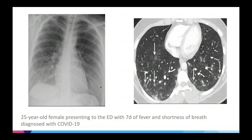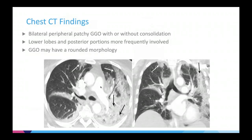This is another example: a 37-year-old male with fever, cough, and dyspnea for seven days, also due to COVID-19. You can see bilateral ground glass opacity that is rounded in appearance in both lungs, also highly suggestive of COVID-19 in the appropriate context.